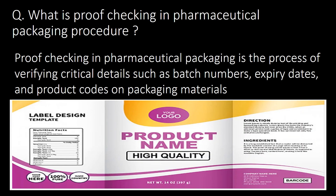What is proof checking in pharmaceutical packaging procedure? Proof checking in pharmaceutical packaging is the process of verifying critical details such as batch number, expiry dates, and product codes on packaging materials.